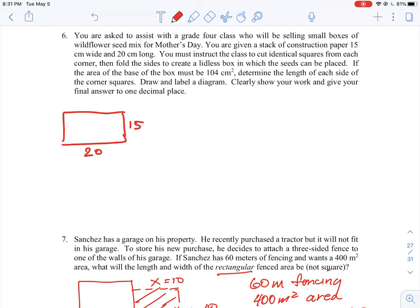You're going to instruct the class to cut squares from each corner. So the squares from each corner will tell you something. That means we're going to take out a little box from each side here and because they're squares, the length and the width of that square is going to be the same.